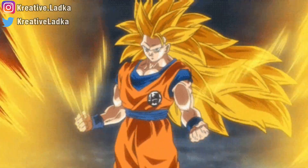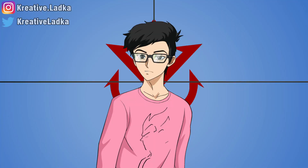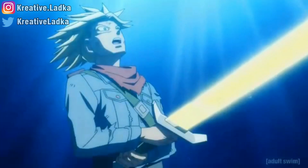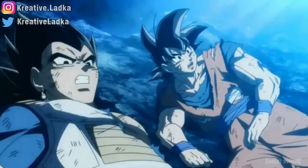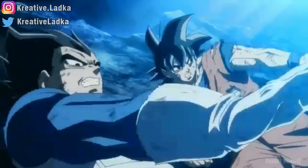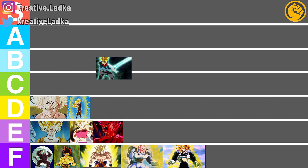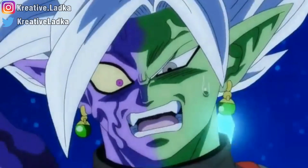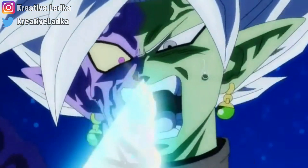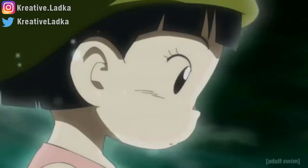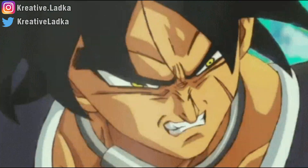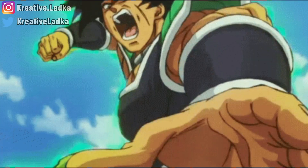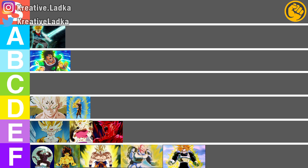Super Saiyan 3 should also go in D tier. Then there is Spirit Bomb Super Saiyan 2, which Trunks used in the Black Goku arc — that was a very strong form, going into A tier. It defeated Zamasu and had the combined power of all of Earth along with Goku and Vegeta.